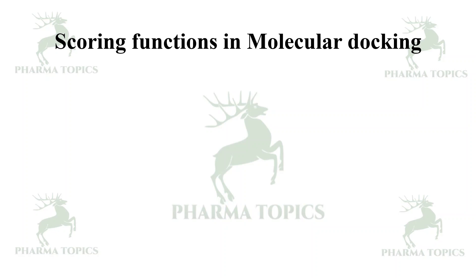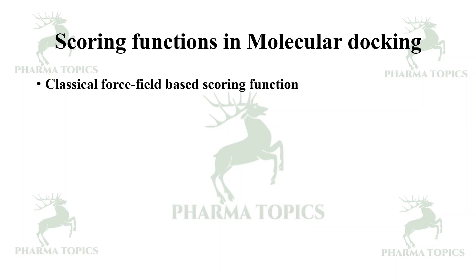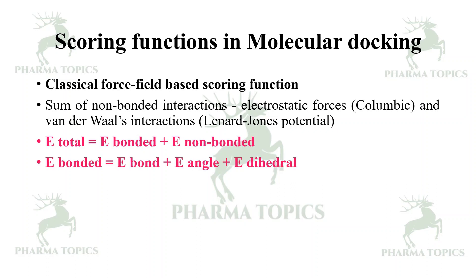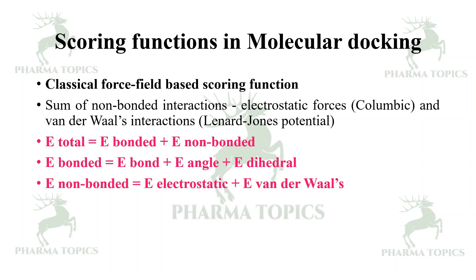Regarding scoring functions in molecular docking, one is the classical force field based scoring function. It is the sum of non-bonded interactions — that is, electrostatic forces (Coulombic) and van der Waals interactions (Lennard-Jones potential). The formula is: E_total = E_bonded + E_non-bonded. E_bonded refers to bond, angle, and dihedral angles — when the ligand flexes, bond angles and bond lengths increase or decrease, and that is taken into consideration. E_non-bonded includes electrostatic forces and van der Waals forces.